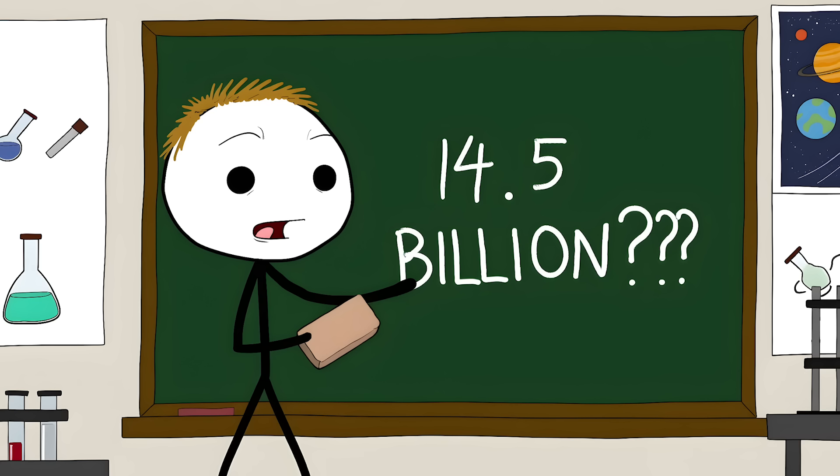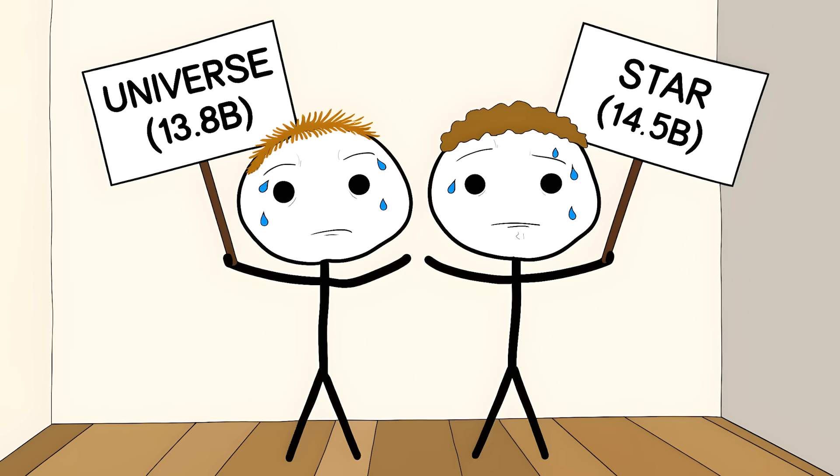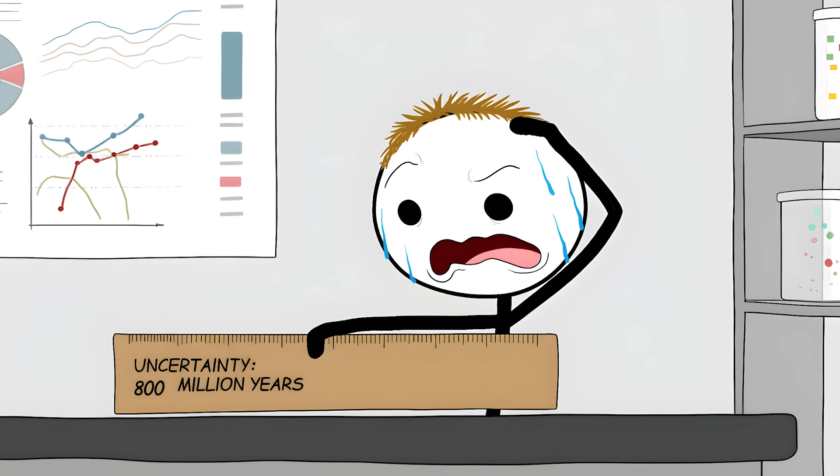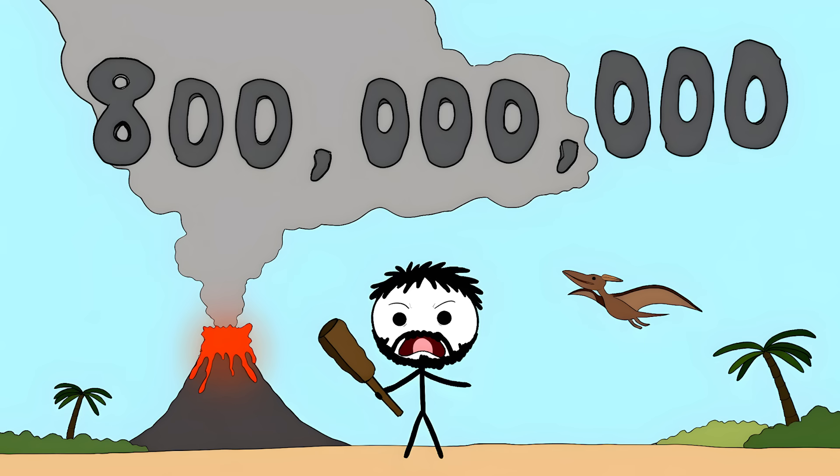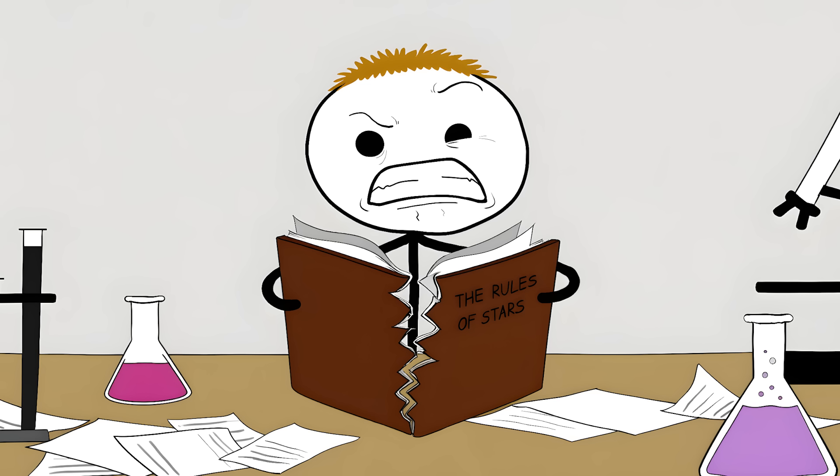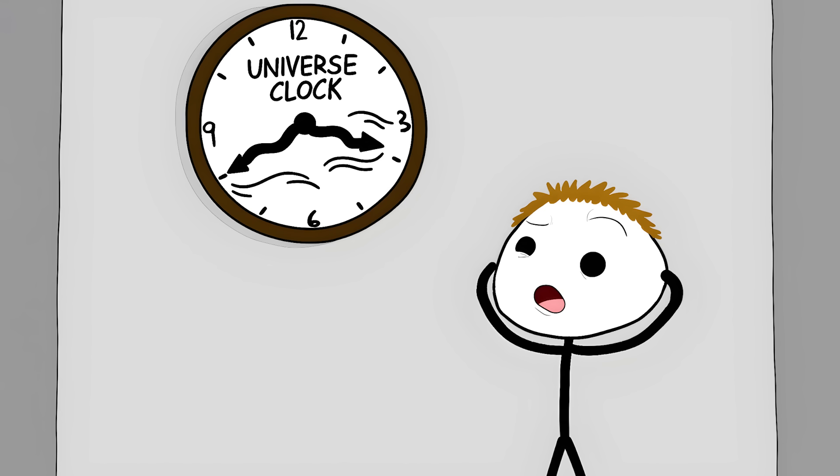There's an uncertainty margin of about 800 million years in these measurements. That's a rounding error larger than all of human history. Either our understanding of stellar evolution needs a major update, or our measurements of the universe's age aren't as accurate as we thought.